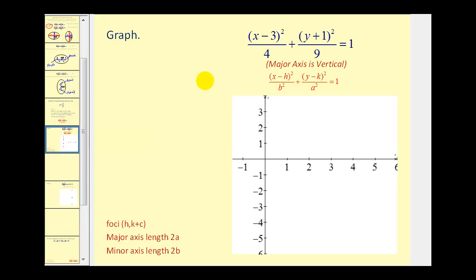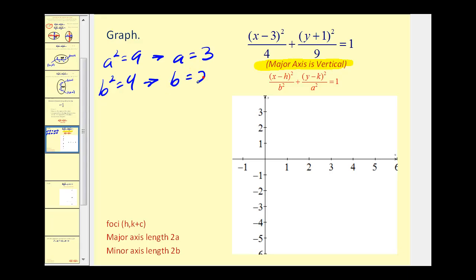Let's first determine whether this ellipse has a vertical or horizontal major axis — that's determined by the larger denominator. Since the larger denominator is under the y part, we have a vertical major axis. From that, a squared equals nine, so a equals three, and b squared equals four, so b equals two. We can also determine the center: if we see x minus three, the x coordinate is positive three, and if we see y plus one, the y coordinate is negative one.